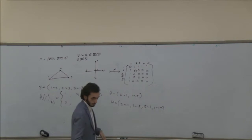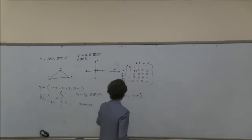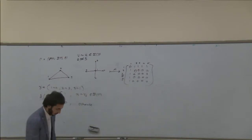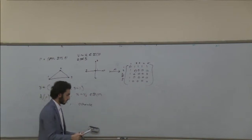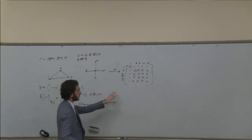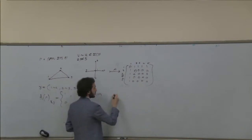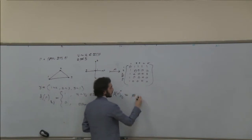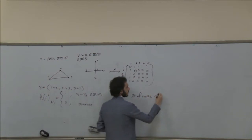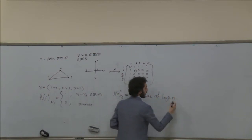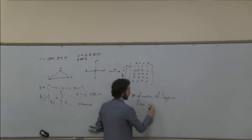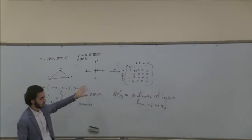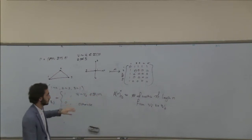Now I define a lemma we will need. The number of walks of length n from vertex i to vertex j is the entry ij of the adjacency matrix A of gamma raised to the power of n. I will not prove this lemma as it is already known, but we can show you after the talk if interested.